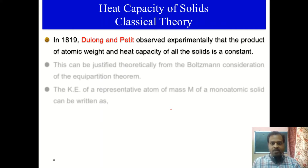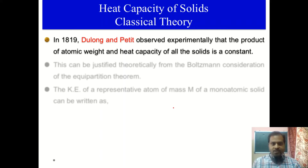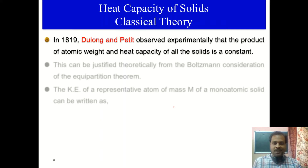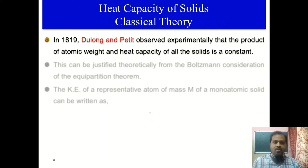The major thing we need to know to find the heat capacity of a system is the internal energy. For a solid, the lattice contribution is the dominating term in the internal energy, whereas the electronic contribution is smaller and the rotational motion is negligible. In this video we are going to discuss about the heat capacity of solids arising due to lattice vibrations, and today we will discuss how it can be explained classically.